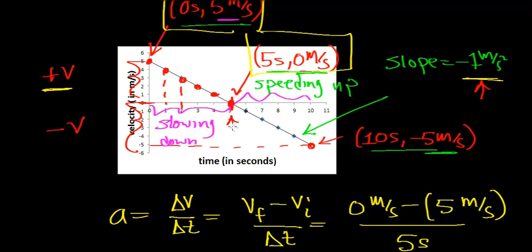Then the object actually turns around at this point and changes the direction of its velocity. When the sign of the velocity and acceleration are the same — in this case both negative — the object is going to be speeding up. The velocity goes from 0 to negative 1 meters per second in 1 second, and then continues to increase — not in the positive direction, but in the negative direction.